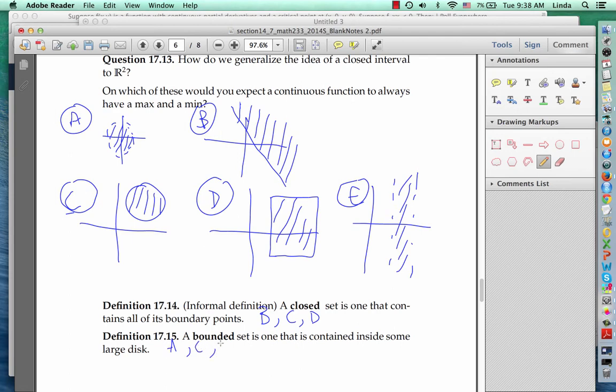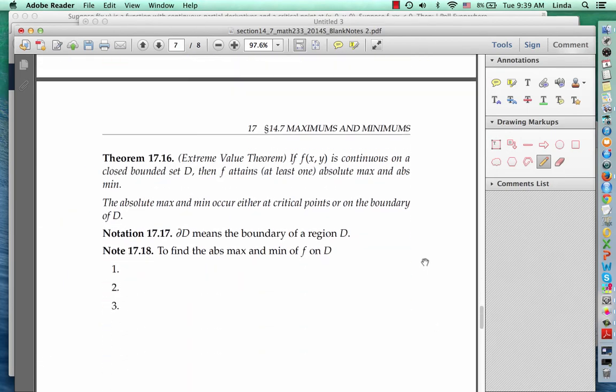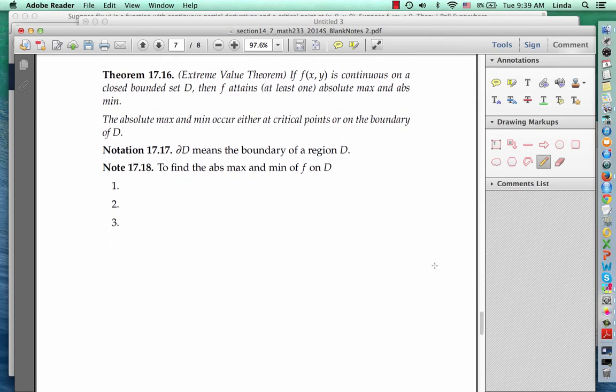A bounded set is one that's contained inside some large disk. So in our examples, a, c, and d are bounded. If you think about what domains you would expect a function to achieve its maximum minimum on, a continuous function, you might say c and d and you'd be correct. For a, the function might not achieve a maximum because it might keep getting bigger and bigger as you go towards this boundary that's not included. And for b and e, the function might not include its maximum because it might get bigger and bigger as you go off towards infinity in one direction or another. So for a continuous function to be guaranteed to achieve a maximum and minimum, you need to have a closed bounded set.